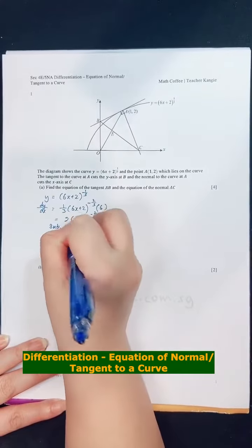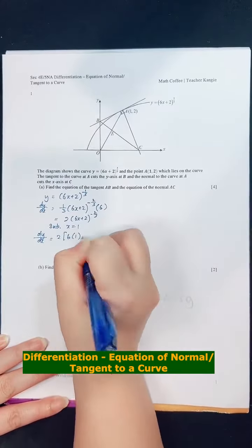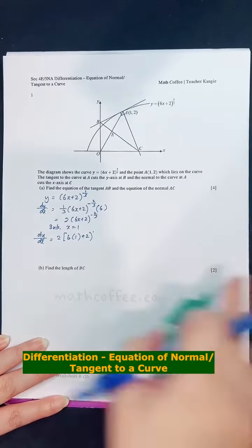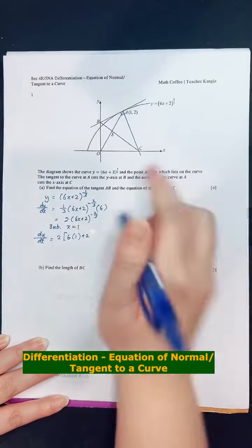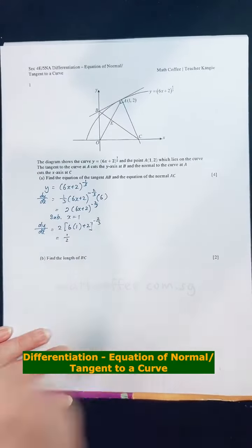So substitute x equals to 1 into dy/dx. So my dy/dx will be equal to 2, 6 times 1 plus 2, square bracket, negative 2 third. So key into the calculator, we will get half. So gradient of the tangent is half.